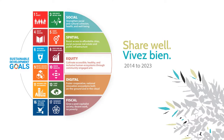As a young organization, our first decade since 2014 has revolved around a plan we call Share Well, Vivier Bien. Its focus is to cultivate equity with, by, and for the arts through four streams including social, spatial, digital, and fiscal concerns. We tie this plan to 12 of the United Nations' 17 SDGs, or Sustainable Development Goals, for 2030. These goals are an invitation to rally all of humanity together to address the urgent threats to our society and our planet.